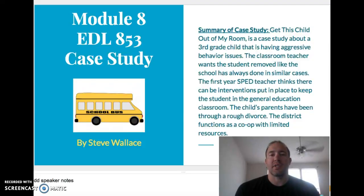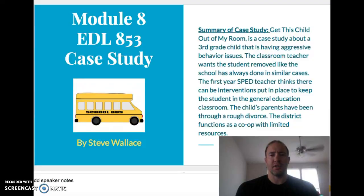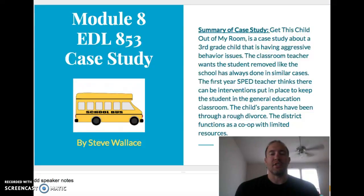A quick summary of this case study: there was a child named Carl, a third grade student, who was having aggressive behavioral issues towards his teacher. His teacher felt unsafe and felt her students could be threatened, so she went to the first-year SPED teacher and said Carl needed to get out of her class. The first-year SPED teacher felt like they could find better options than completely removing Carl from the class. The child's parents had recently been through a rough divorce, and his siblings also had emotional behavior issues. The district was a large co-op with limited resources.